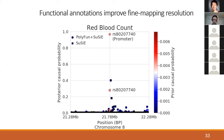Here's another example with red blood cell count as the phenotype. The top SNP was in a promoter, and this was enough evidence to push it to the top. The model without functional annotations wasn't confident enough — in fact, this SNP wasn't even the top candidate according to the non-functionally-informed method.